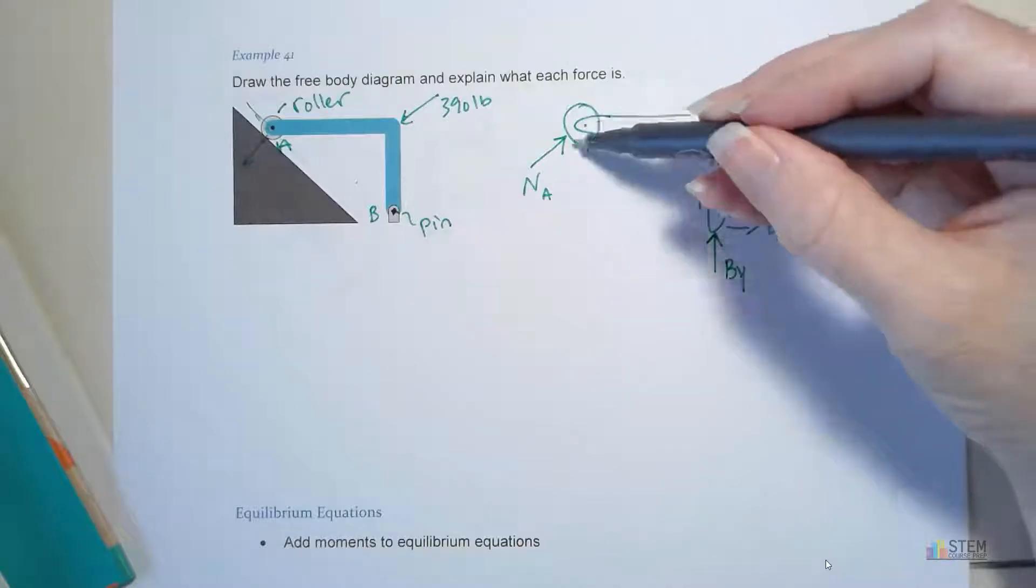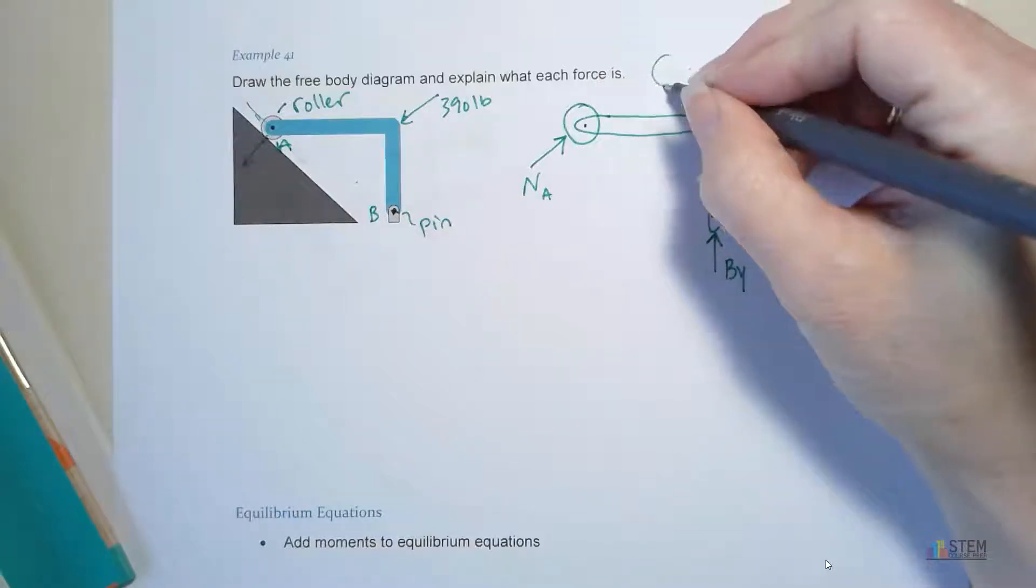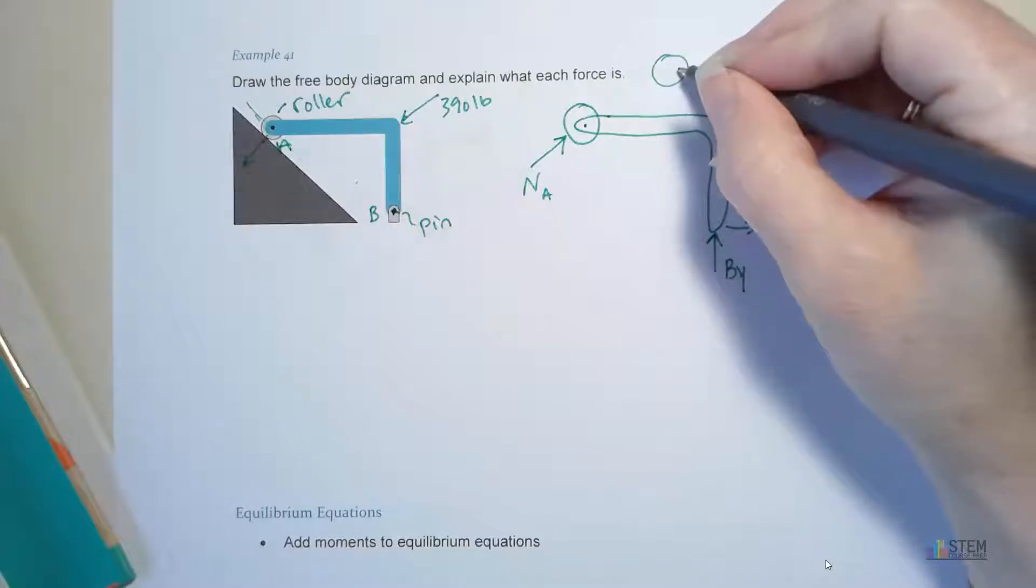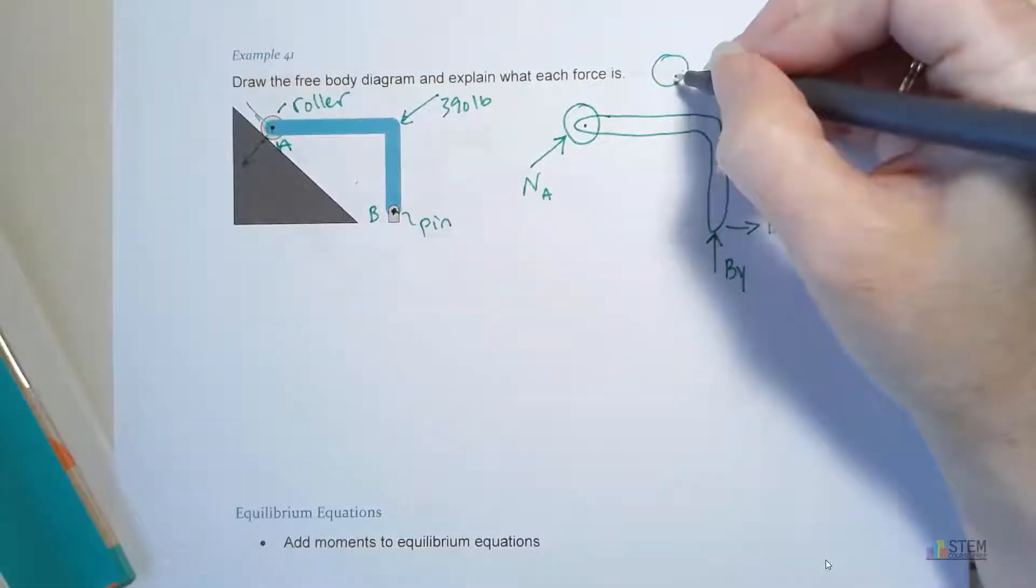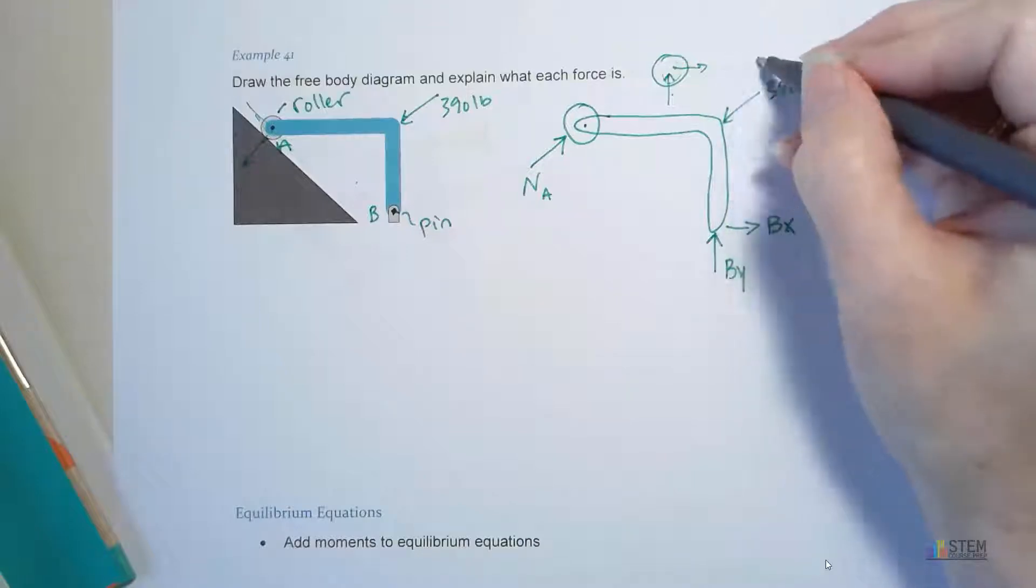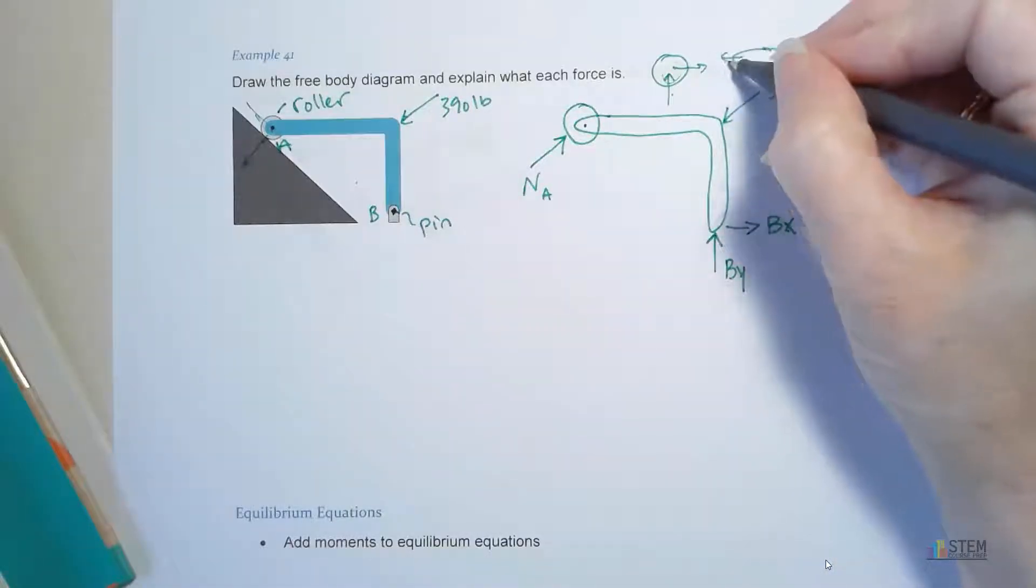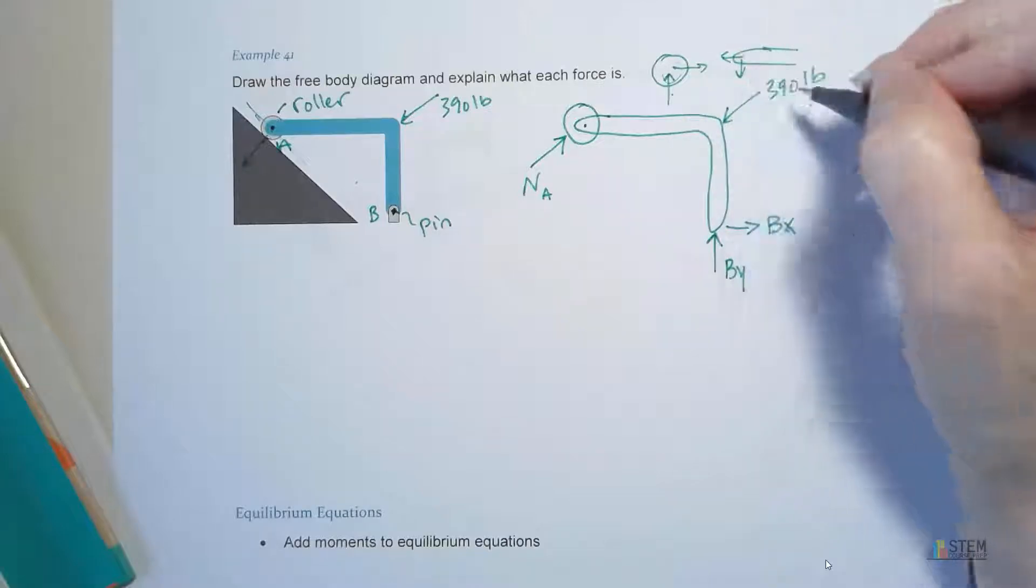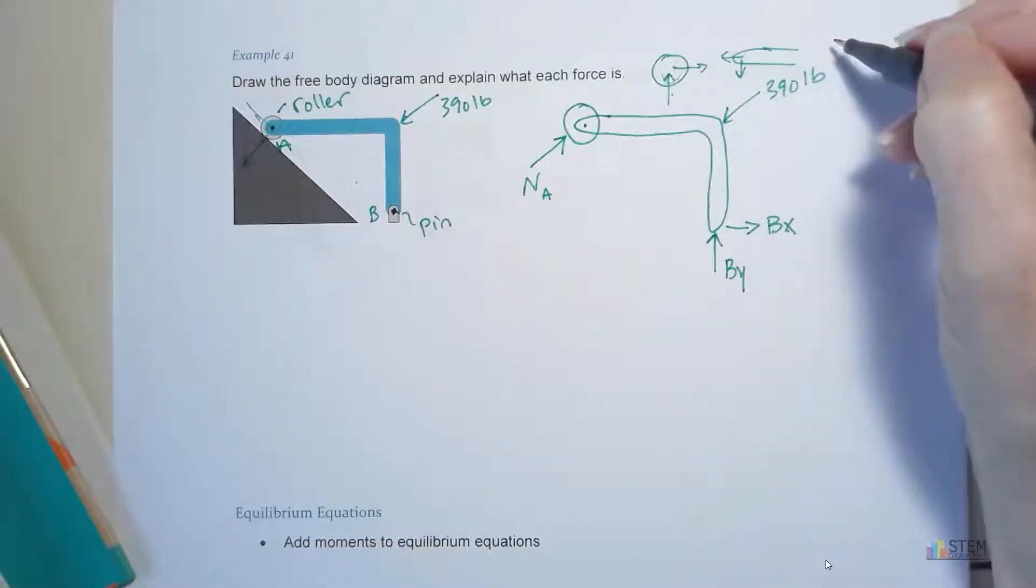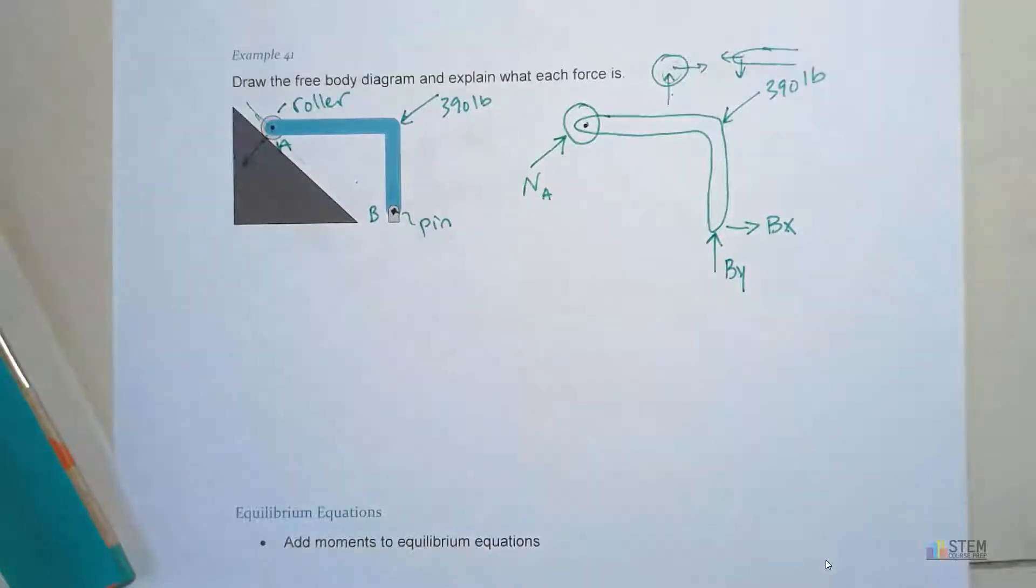Now, you might be wondering about this point here where the roller is attached. And we're going to cover this more when we get to frames and machines, but just so you see why. So if you think about it, they're pinned together, so that's going to prevent any sort of translation. So the pin has a force here, or the two forces here with the roller, but then on the part where it's connected to this member here, it's got equal and opposite forces. So those all counteract each other. We're going to cover this more in a later chapter, so if this doesn't make sense, don't worry about it.